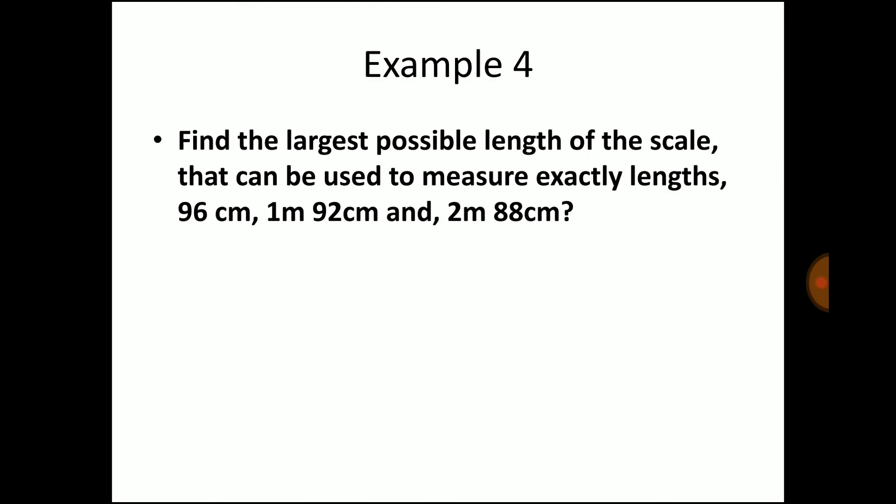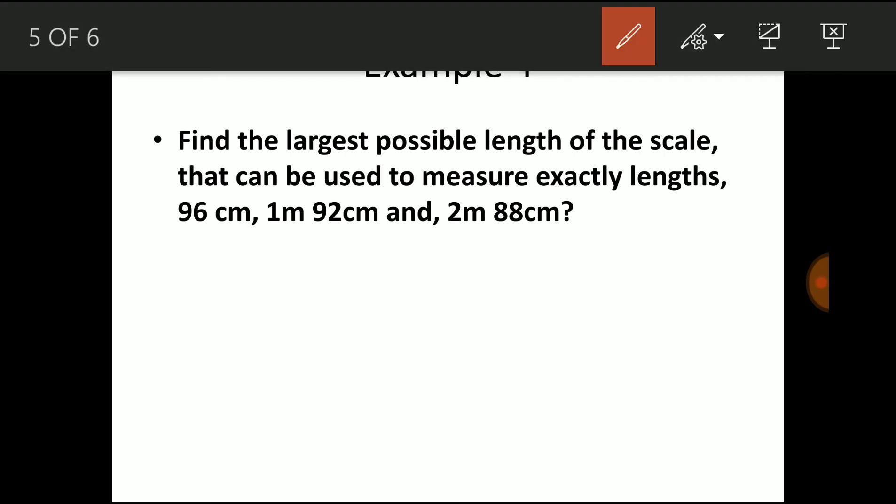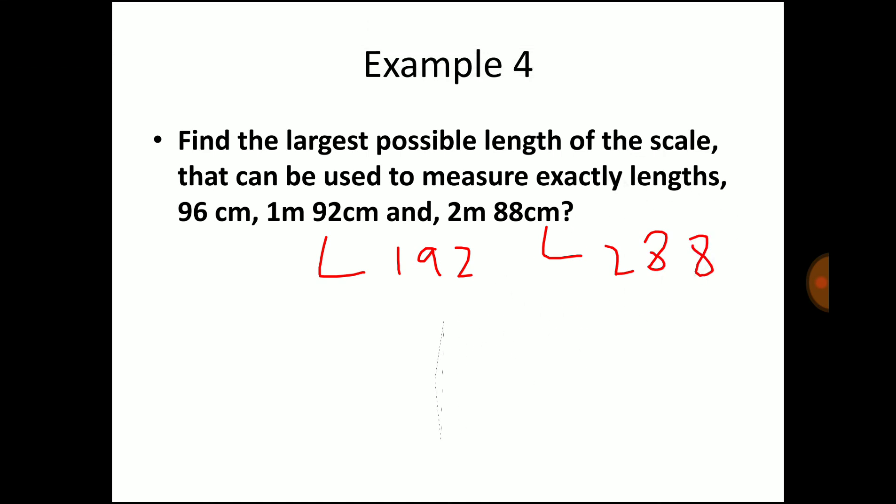Now moving to example 4. Find the largest possible length of the scale that can be used to measure exactly lengths 96 cm, 1 m 92 cm and 2 m 88 cm. 1 m 92 cm is nothing but 192 cm and 2 m 88 cm is 288 cm. From the question we can conclude that it is a 3 sided figure. So we can assume the figure as a triangle.